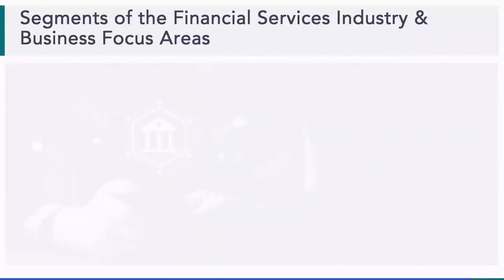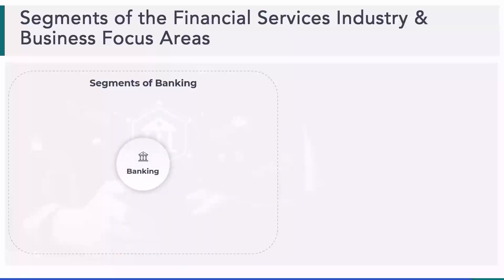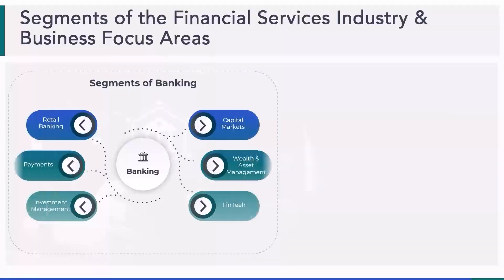When we talk about global financial services, there are what we call segments. This is a framework I've developed over the years in terms of how to think about global banking. On the left, we have the segments of banking. For our purposes, we like to think about six broad categories: retail banking, capital markets, payments, wealth and asset management, investment management, and fintech.